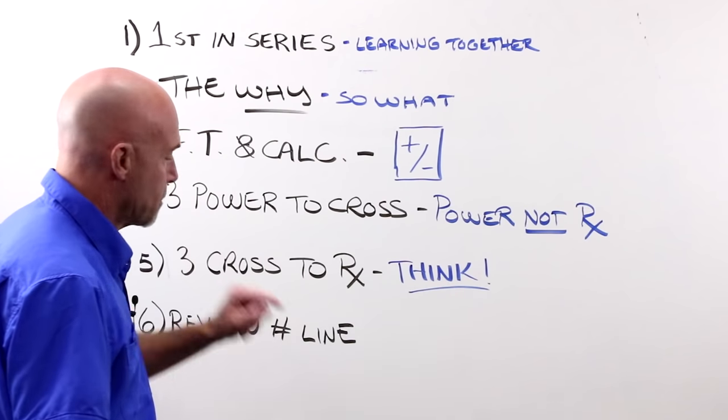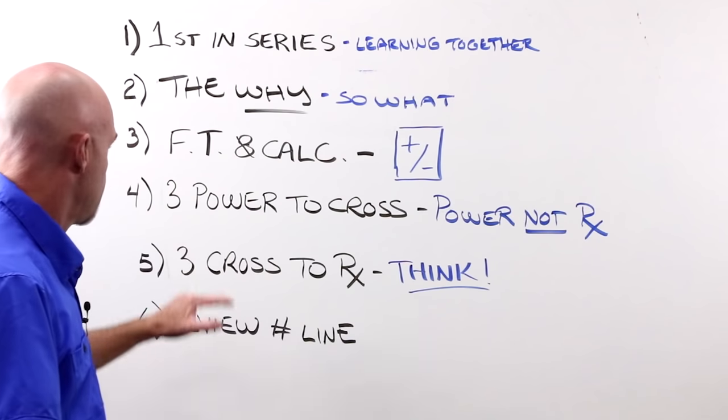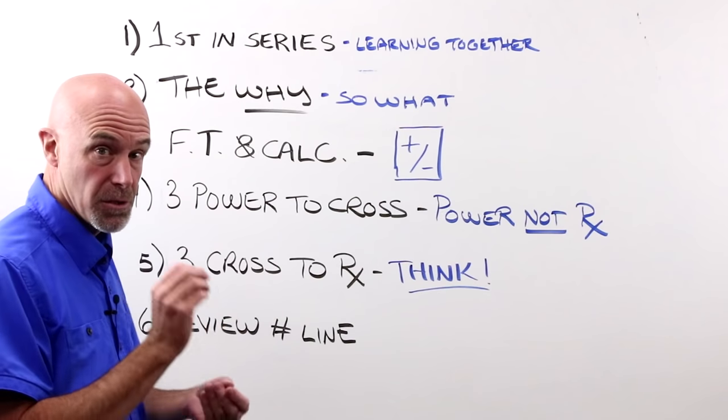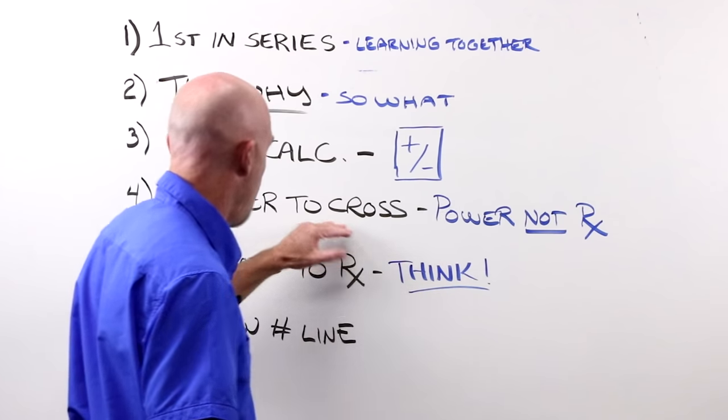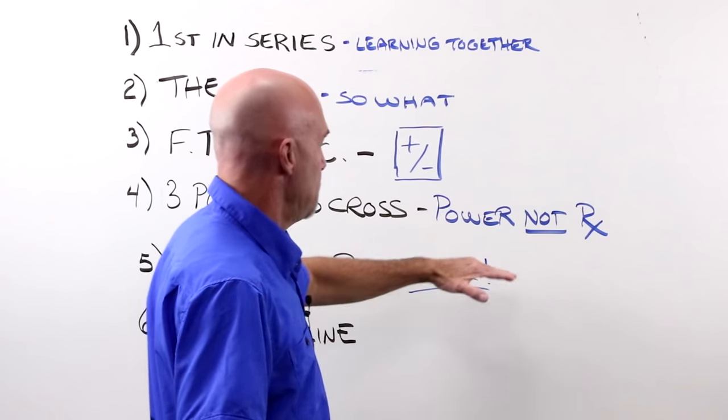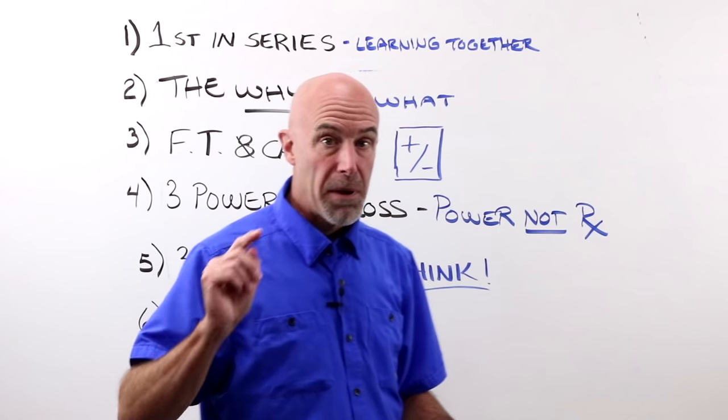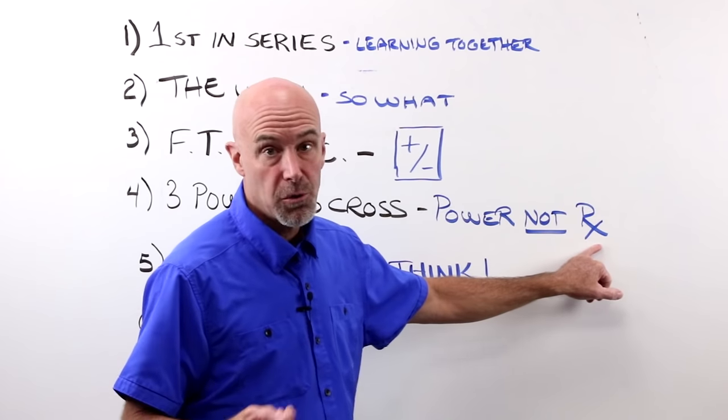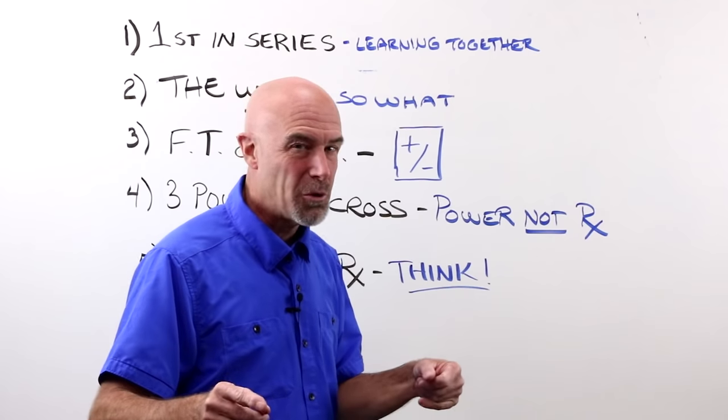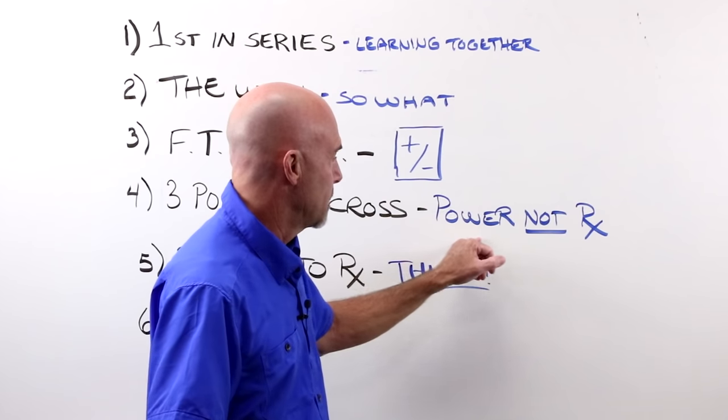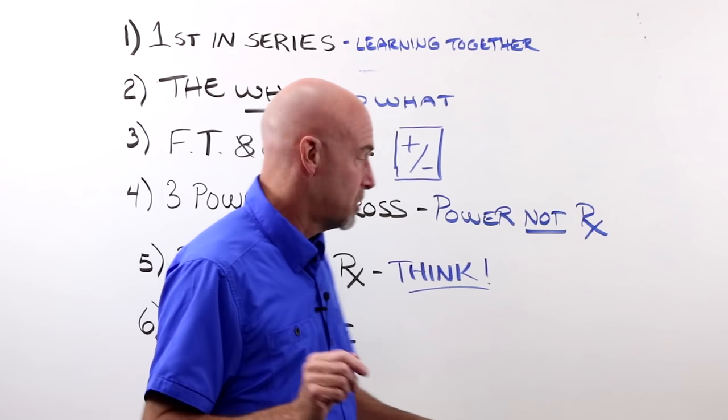Number four, we are going to do three examples of taking the power from the lens, the things that we were just talking about and looking at, and putting them onto the cross. Keeping in mind that we're talking about power, not prescription. And they're both P words, and I have a tendency to mix them up, and I'll use them wrong sometimes, but remember it's power, not prescription.